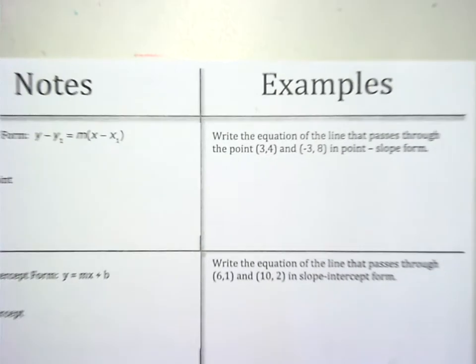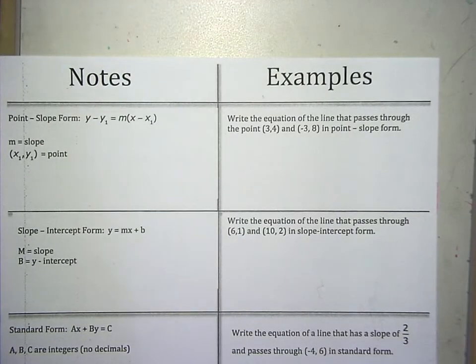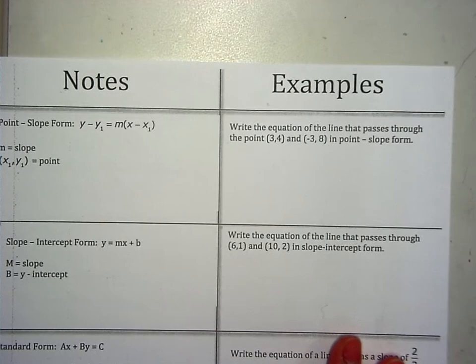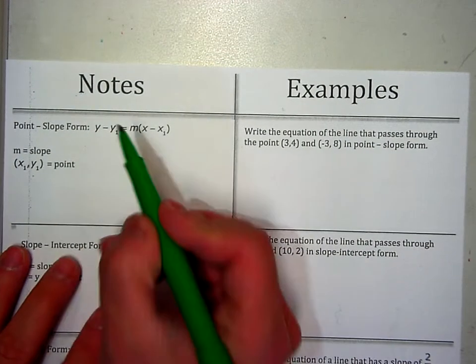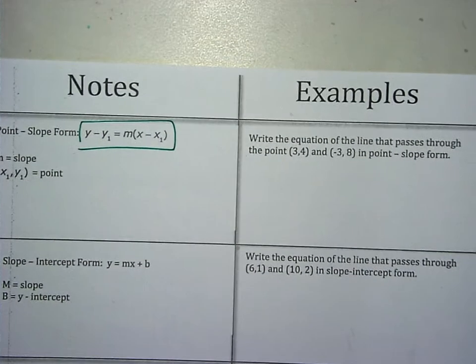Okay, today we're just going to review key examples, key topics from this chapter. So the first example on your foldable says, write the equation of the line that passes through these two points in point-slope form. And if you remember, this is point-slope form. And remember, what you need is a point and a slope.